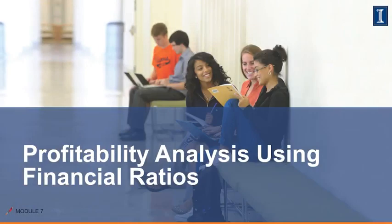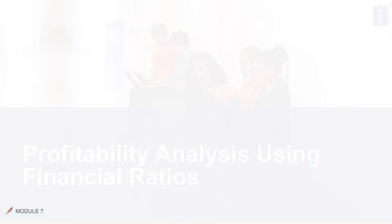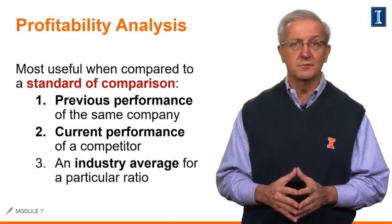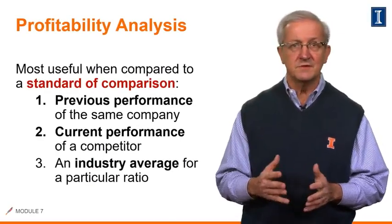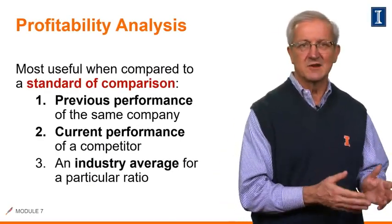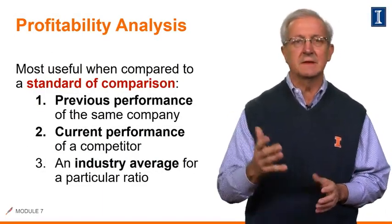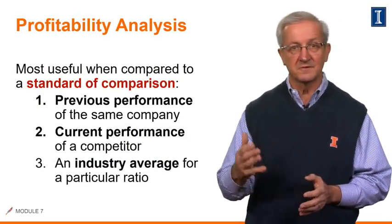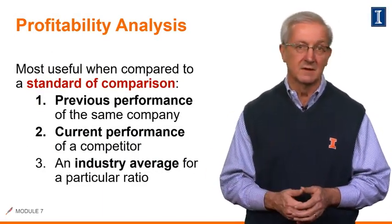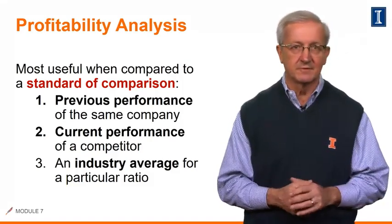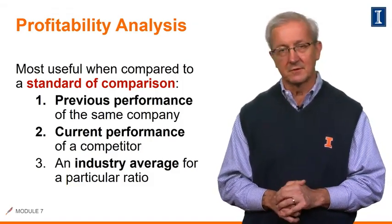In lesson four, we will now discuss the profitability analysis and how our financial ratios can help us with this important analysis of any company we're looking at. The profitability analysis is most useful when the ratios are compared against some sort of standard of comparison. There are three that I list here. The first would be the prior performance of the same company, which is basically a trending analysis of those past results.